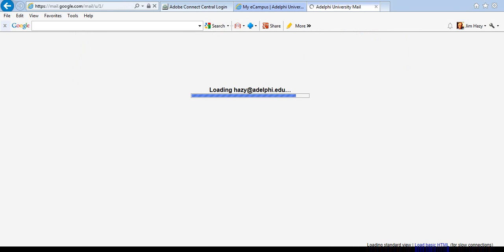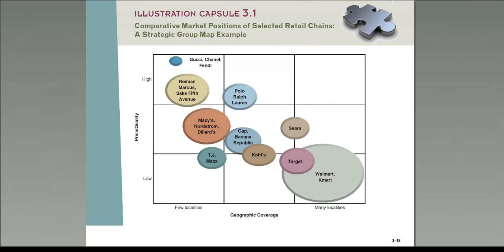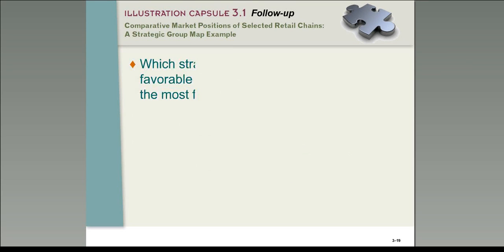Here's an example using retail chains. Along the bottom we have geographic dispersion — how broadly distributed they are — and on the other axis we have their price-quality metric. You can see that different companies go after different kinds of approaches. In the broad geography, low price-quality space, you have Kmart and Walmart — the size of the bubble represents their revenue, and you can see there's a very strong rivalry among those players. But they don't really compete with Gucci, who has a very high price-quality position and is much more geographically focused in where it locates its stores.